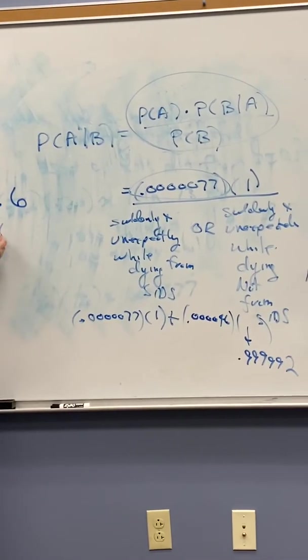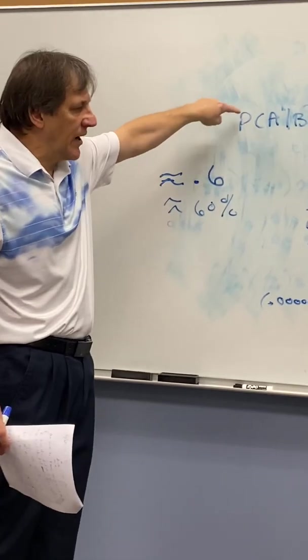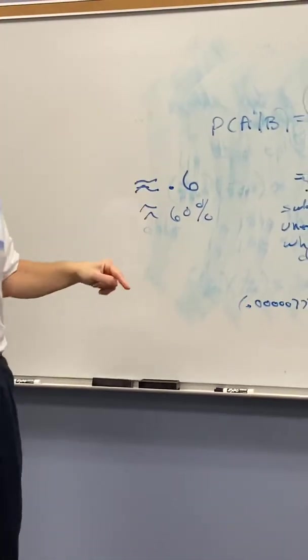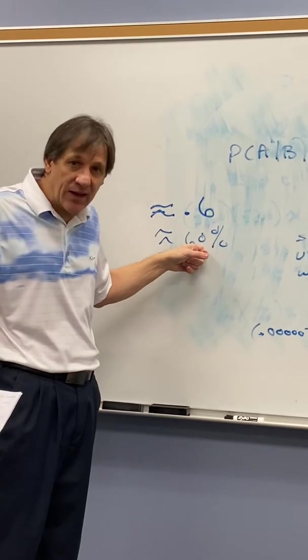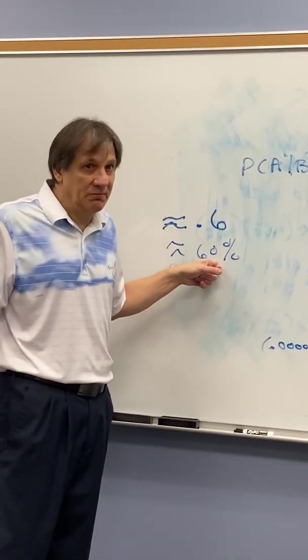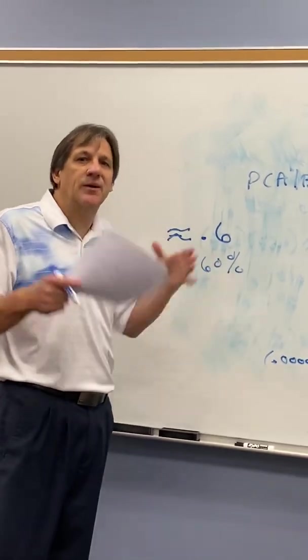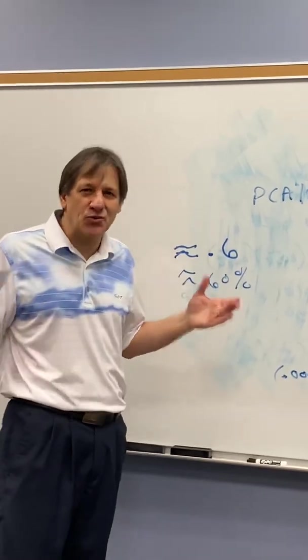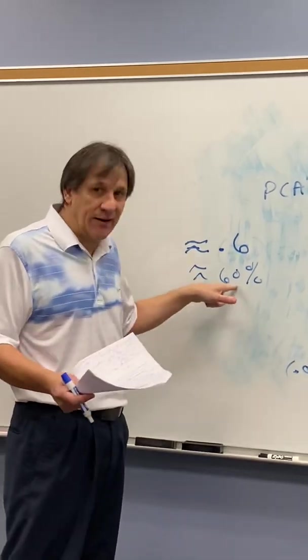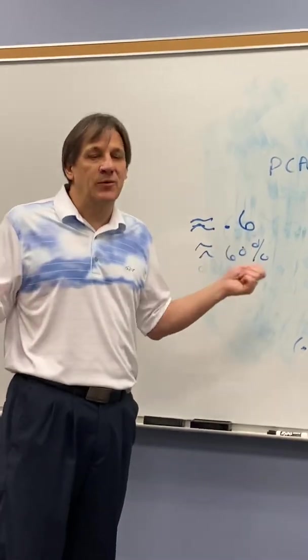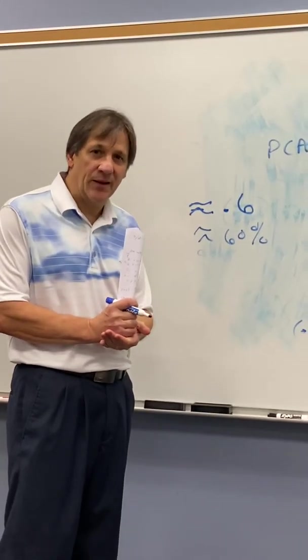What does that tell us? It tells us that the probability the two children died from SIDS given that they died suddenly and unexpectedly is 60%, which means there's a 60% chance the woman was telling the truth. Now she may have killed her children. Bayes' Theorem would say there's a 40% chance. And this happened in the United Kingdom, and I'm not completely aware of the United Kingdom's rules, but I would be pretty sure that you better be more certain than 40%, right? 1 minus 60%, you better be more certain than 40% before you're going to lock somebody up for murder. She ended up being acquitted, and that's the end of the story. So Bayes' Theorem ended up basically acquitting her.